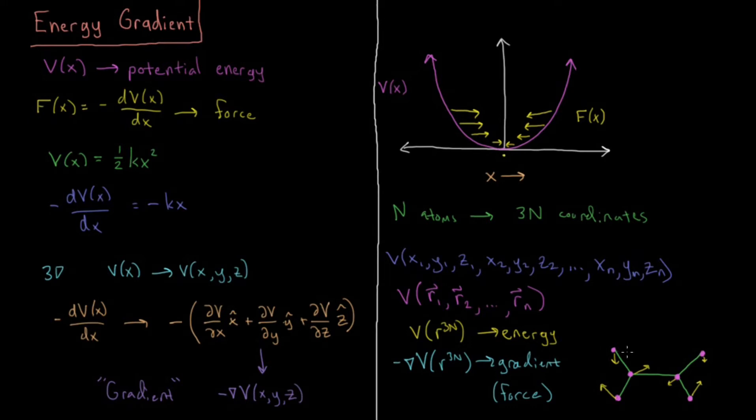So these force vectors on individual atoms, depending on where the gradient points, might be something like this. It tells us what is the direction that that atom wants to move, which will be most quickly downhill in energy.